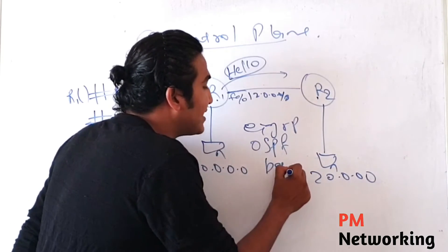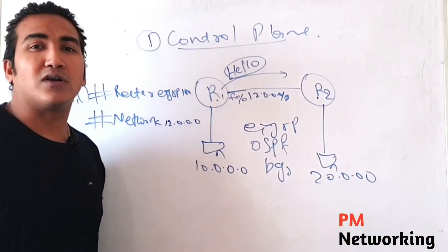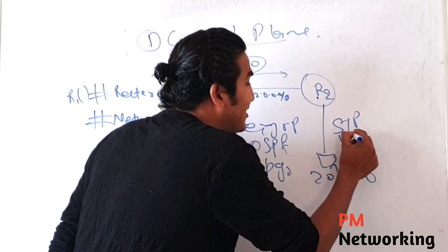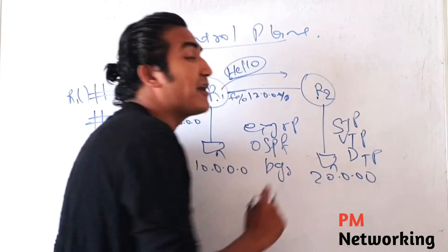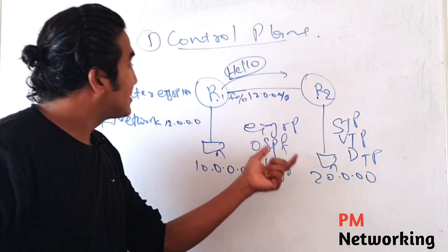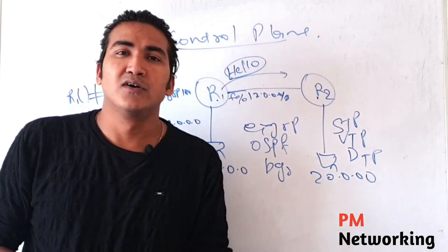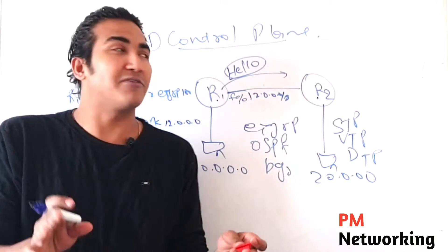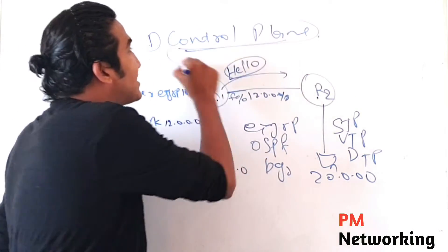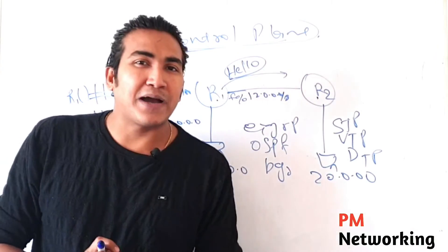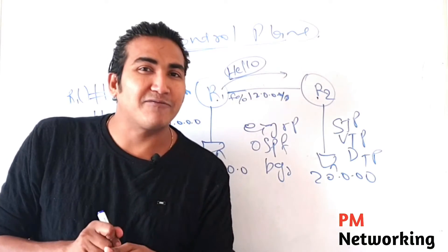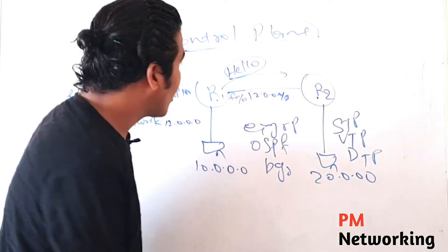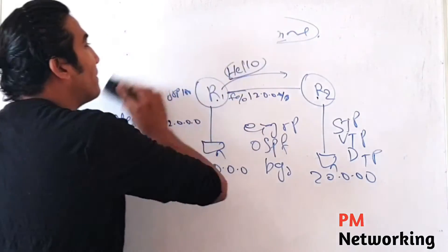So what are the examples of control plane traffic? Traffic of EIGRP, traffic of OSPF, traffic of BGP, traffic of STP, traffic of VTP, traffic of DTP — traffic of any protocol. Any traffic which is generated by a device for another device is known as control plane traffic. Always keep in mind: control plane traffic is traffic generated by a device to a device.